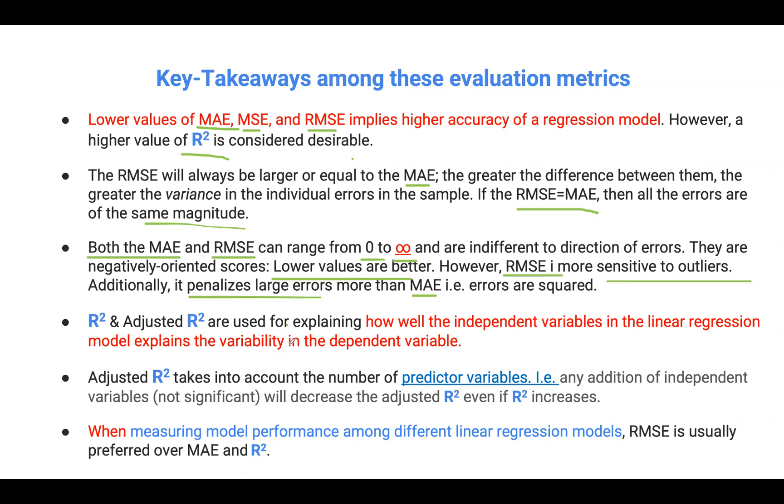Now, when comparing both R squared and adjusted R squared, both are very useful in explaining how the independent variables in our regression model explains the variability in the dependent variables. However, if we are looking at adjusted R squared, this only takes account of the predictor variables or our independent variables.